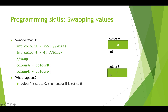Now we have two variables that both have zero in them. When we execute the second line, we copy what was in colorA into colorB — but we've just copied the zero back in. So we still have two variables that both have black. That wasn't a successful swap; this approach is incorrect.